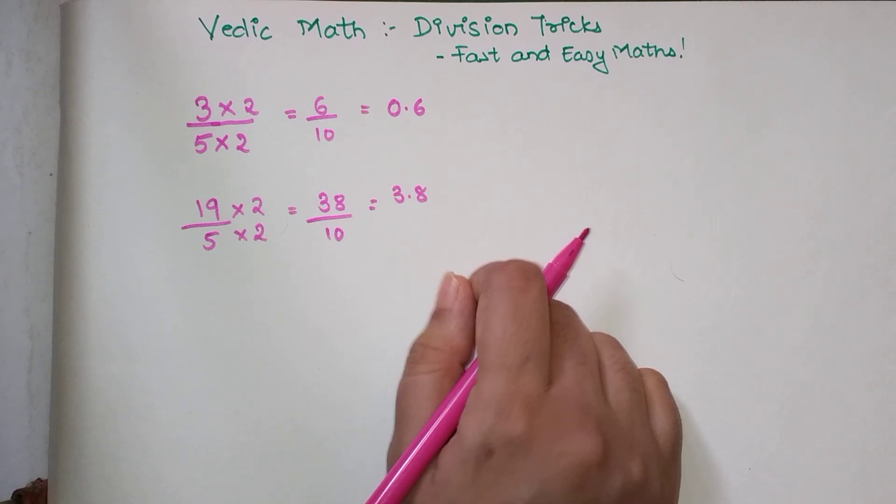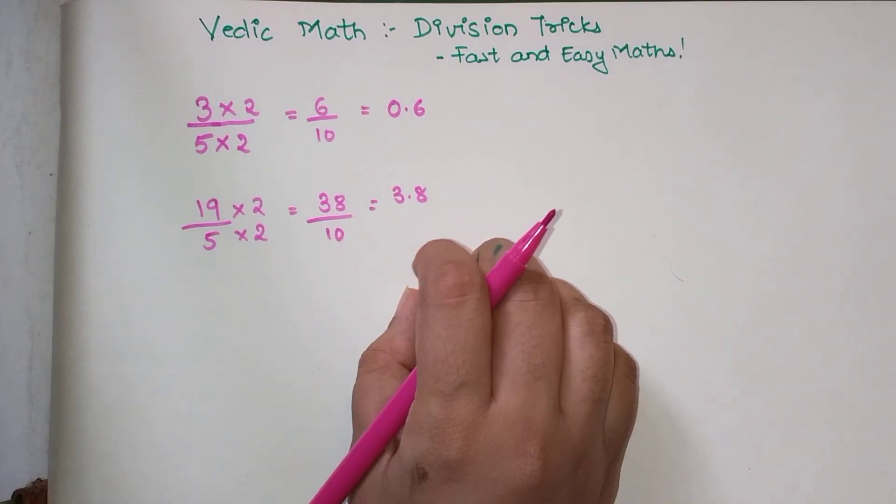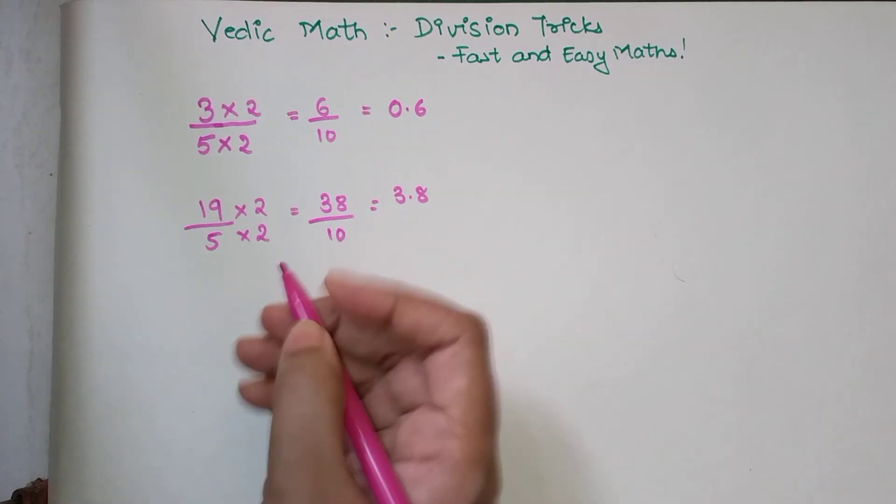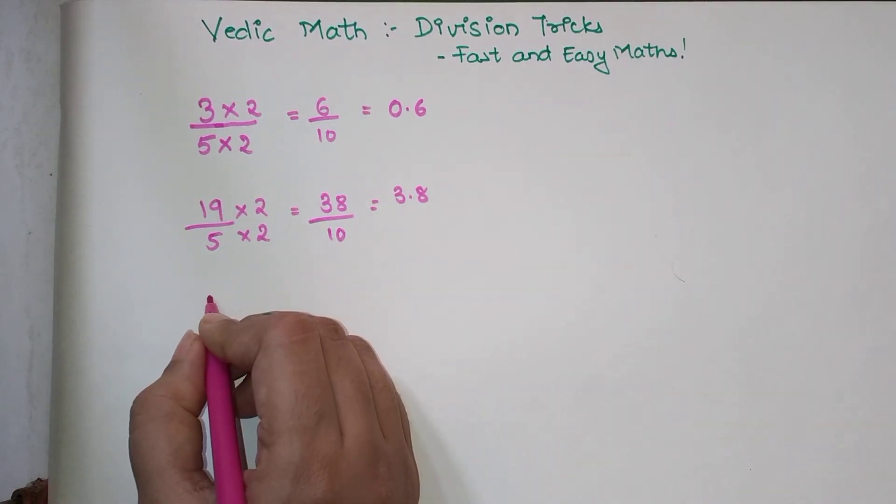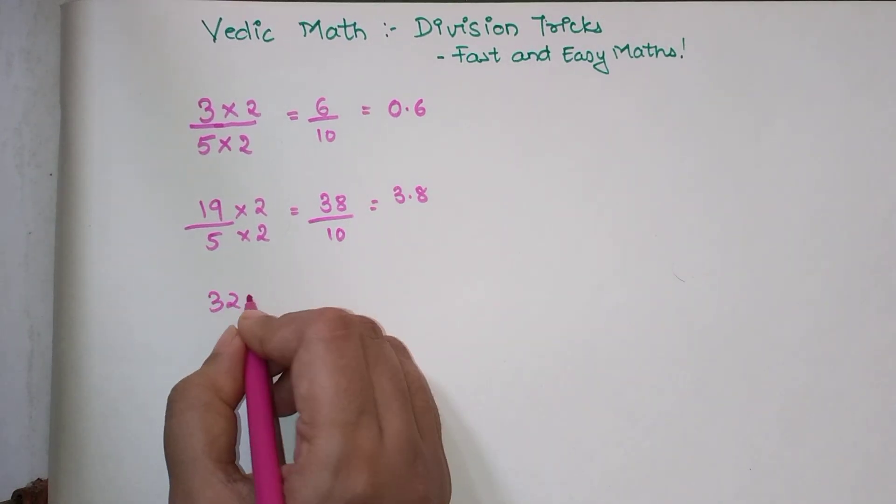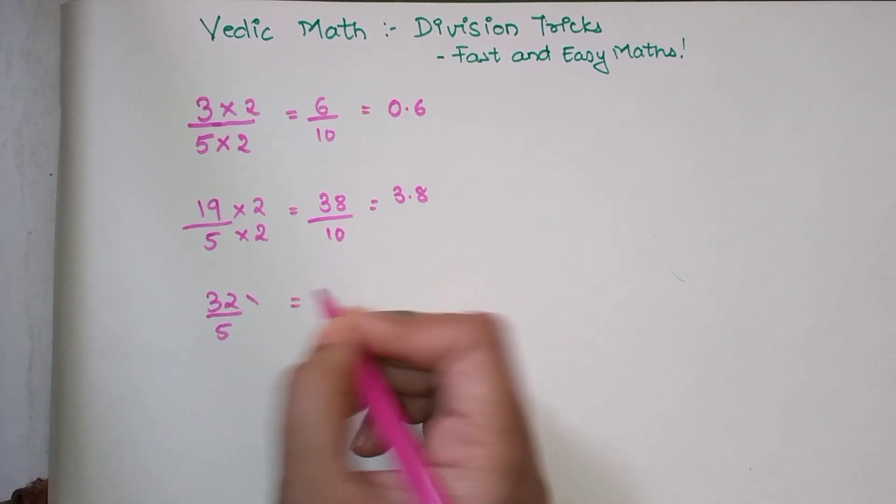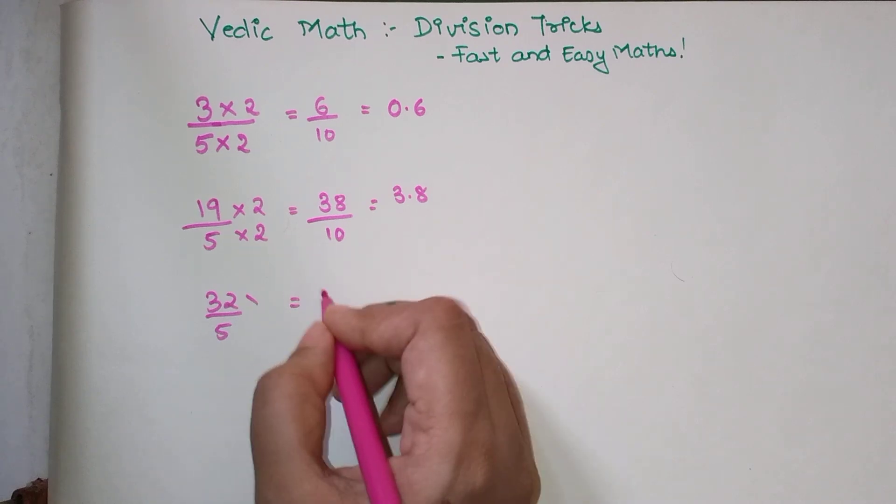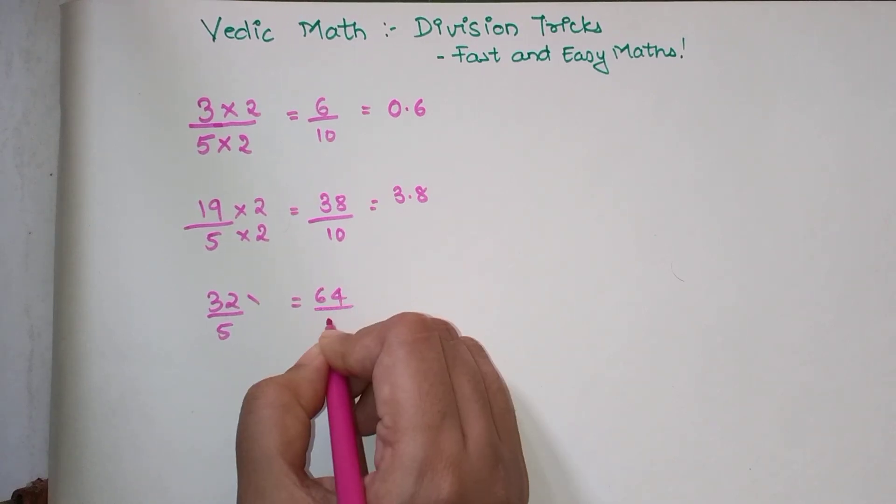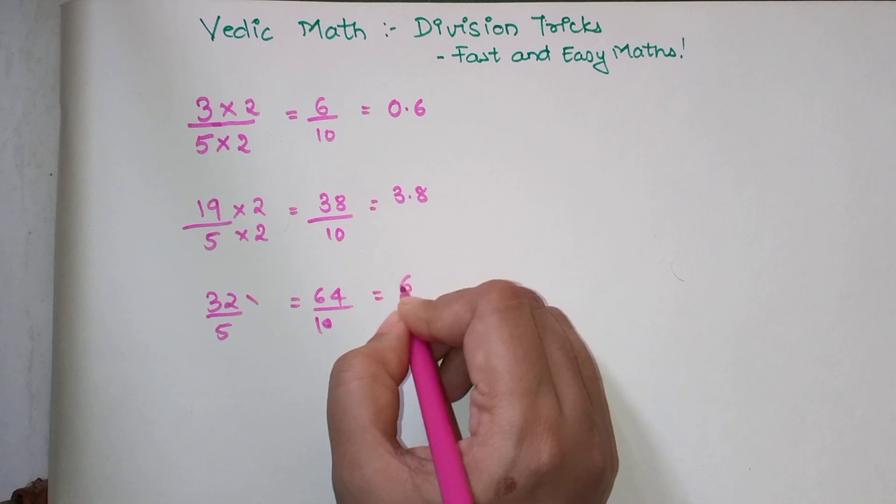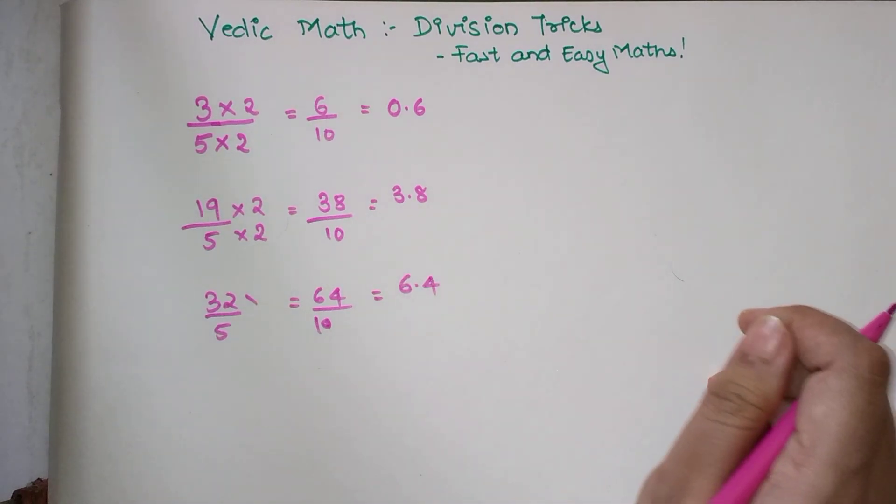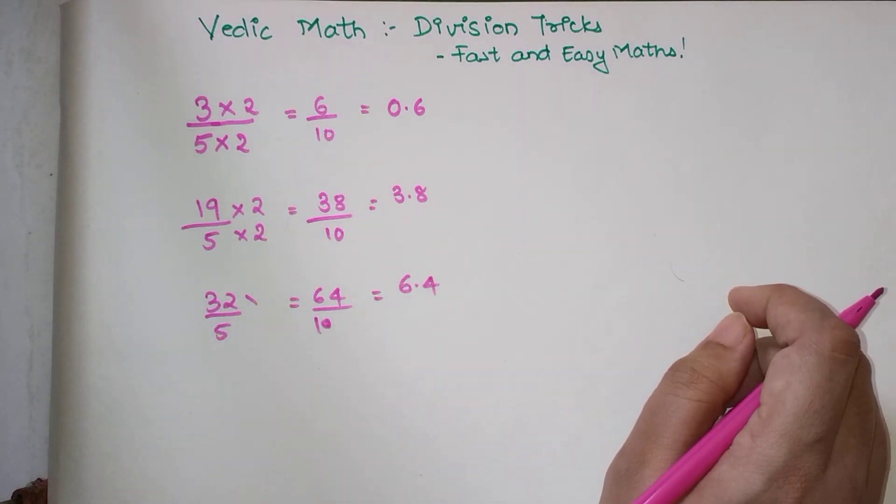Let's take another example: 32 upon 5. My final answer would be double of this, which is 64 upon 10, so my answer is 6.4. I hope this is very easy now for everyone.